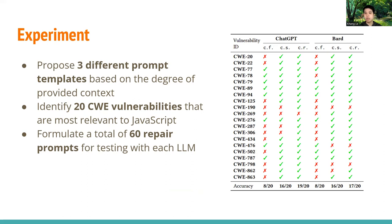To ensure that our study is practical and applicable to the real world, we also identify 20 common weakness enumeration vulnerabilities, or CWEs in short, that are most relevant to JavaScript. As a result, we formulate a total of 60 repair prompts for our testing with the large language models.